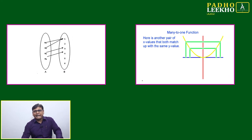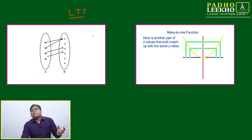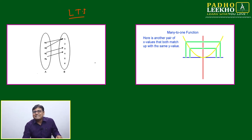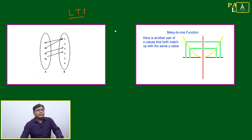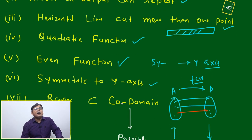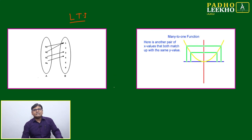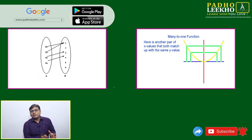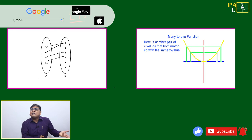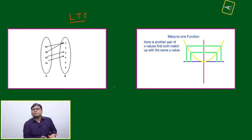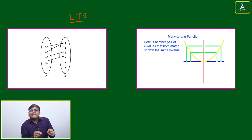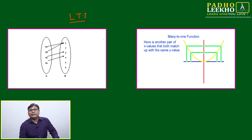Now we will take the help of LTI — Learn Through Images — a very powerful technique. Whatever I have written in six lines of criteria, once I represent it with one image, all six lines will become crystal clear. This is because the brain learns through images; it is the software of our brain and we have to follow that. Brain always accepts images, so we are learning through LTI.